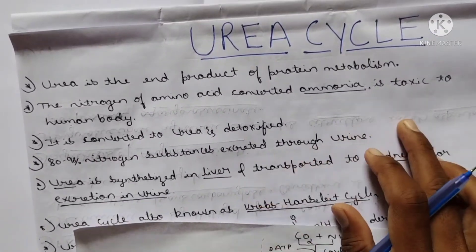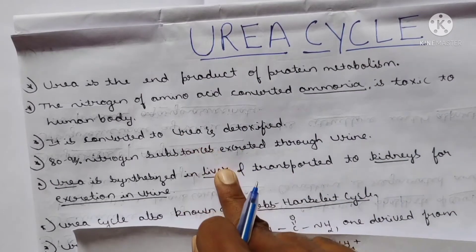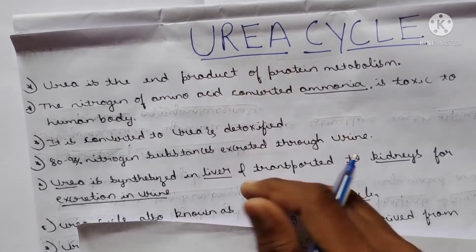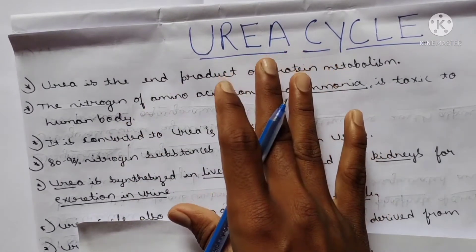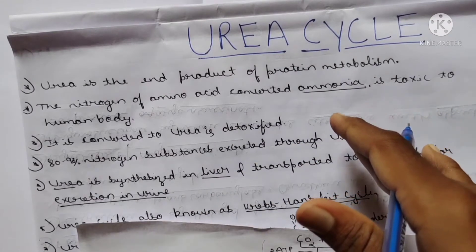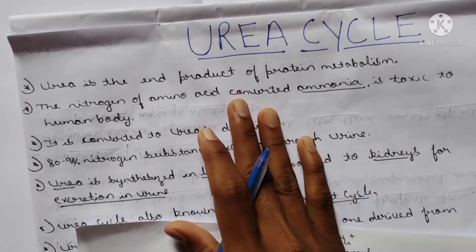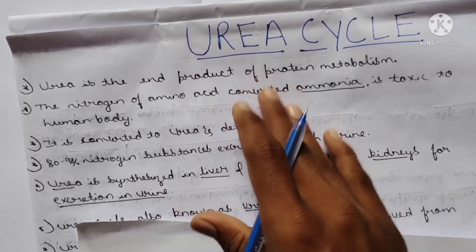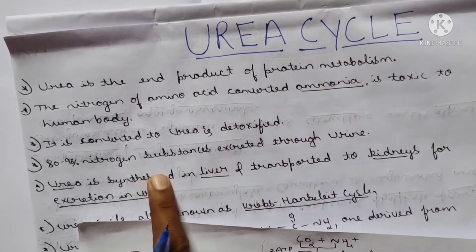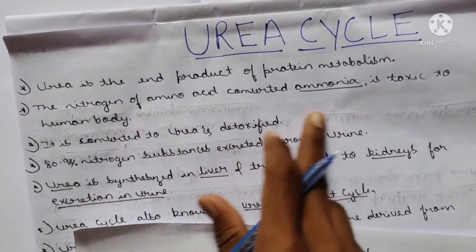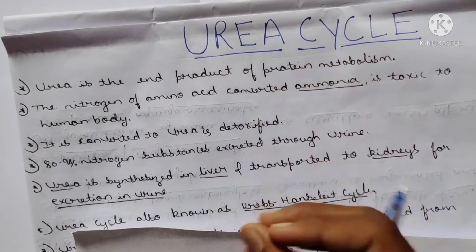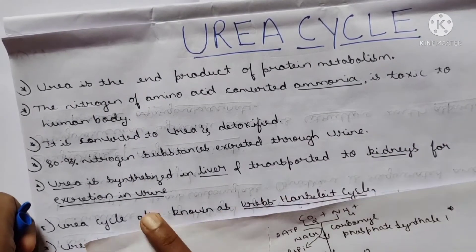Ammonia is a toxic substance and must be converted into urea to be detoxified. This conversion occurs by means of the deamination process - initially transamination is present, followed by deamination. Approximately 80 to 90 percent of nitrogen substances are excreted through urine in the human body.